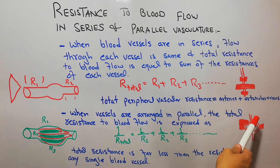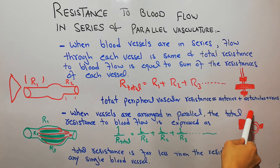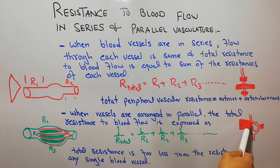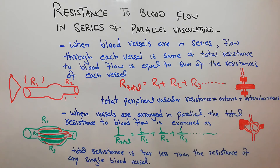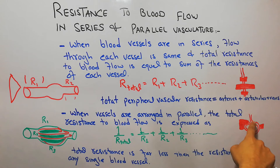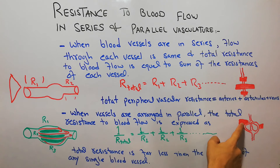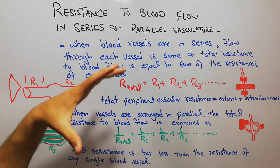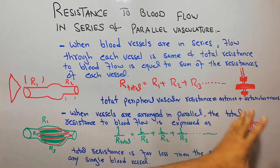In the human body, when the heart pumps blood into the aorta, the blood gets divided — some goes to the liver and some goes to the stomach. The blood going to the liver faces only the resistance in the liver, while the blood going to the stomach does not face the resistance of the liver. So the total resistance is far, far less in a parallel arrangement.